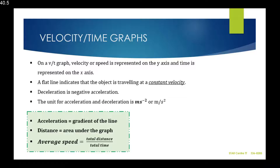Deceleration is negative acceleration. So if we see that a vehicle has an acceleration of minus 10 meters per second squared, it means it's slowing down because of that minus sign. The unit for acceleration and deceleration is meters per second squared, or m/s².